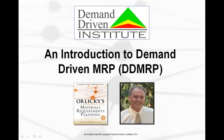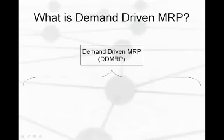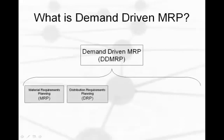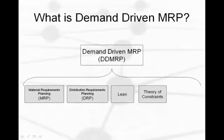I would definitely recommend watching our first video, Fixing the Planning Problem, before you watch this video. Demand Driven MRP is a multi-echelon solution for today's increasingly complex planning and execution scenarios. It takes the remaining relevant aspects of traditional MRP and DRP tactics, and combines it with the pull-based or demand-driven approaches of Lean and the Theory of Constraints, as well as introduces revolutionary new innovations.